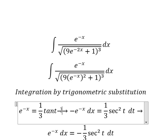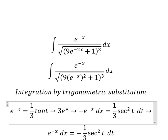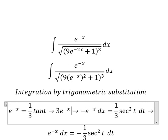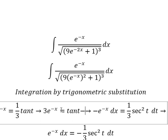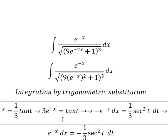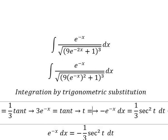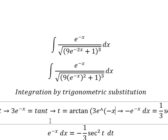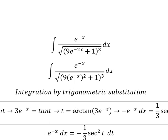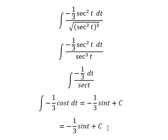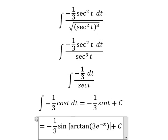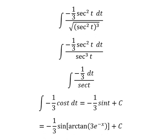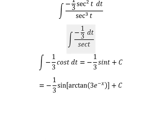We multiply both sides by 3. Using arctan, we have t equals arctan of 3e to the power of negative x. Substituting this back gives us the final answer. Thank you for watching.